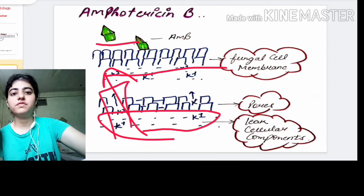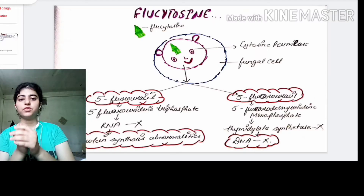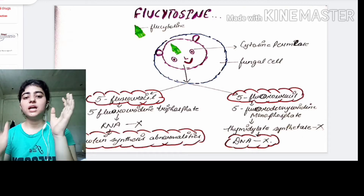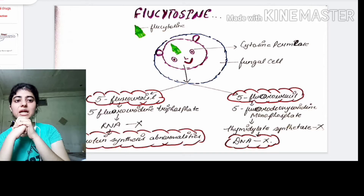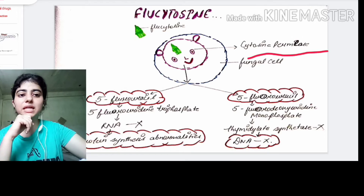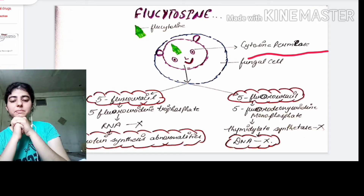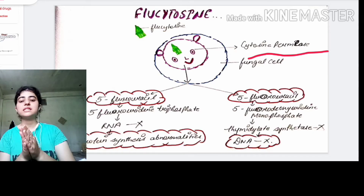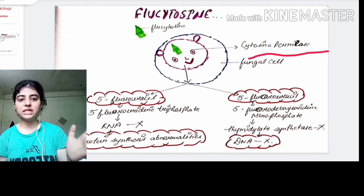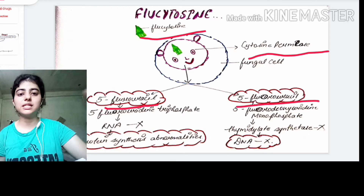Next, how does flucytosine work? The fungal cell has a specific receptor — cytosine permease — through which flucytosine binds. It is taken up by the cytosine permease and internalized into the cell. Inside, there is intracellular deamination — the removal of an amino group — which converts flucytosine into 5-fluorouracil.